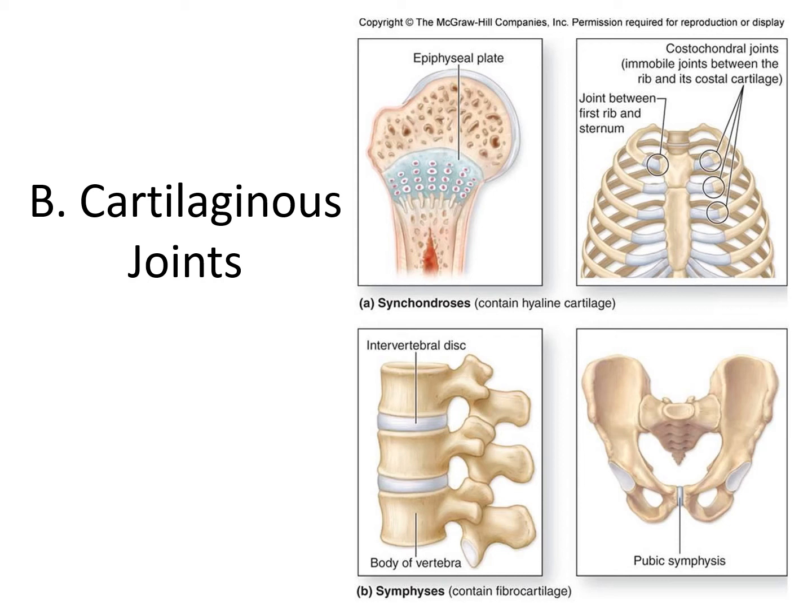When we're dealing with symphysis we're dealing with a bit of movement — these are amphiarthroses. The pubic symphysis between the pubis bones would be an example, and the intervertebral discs between the vertebrae would be another example.